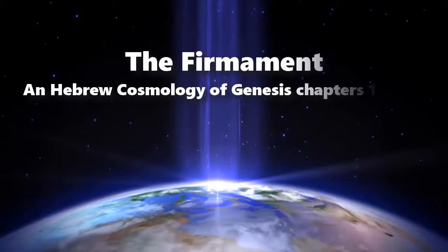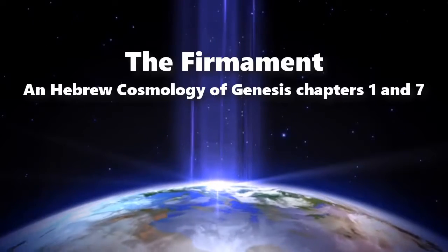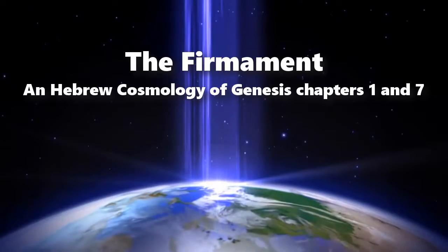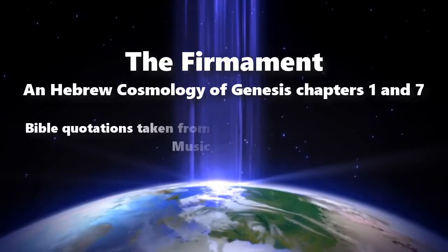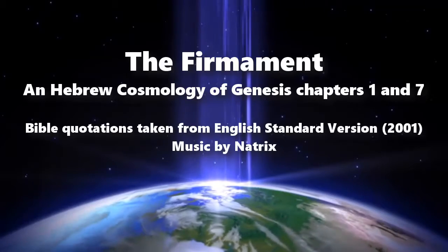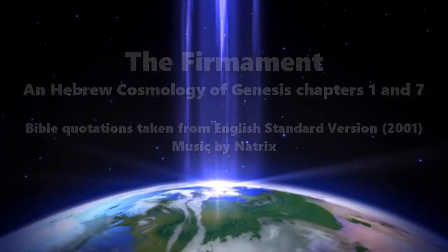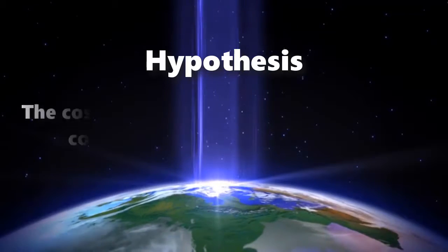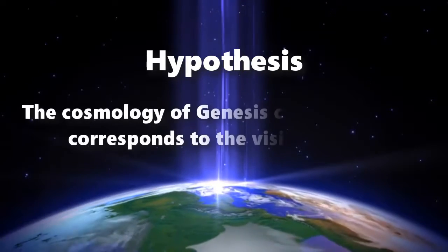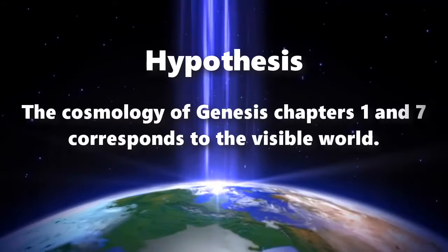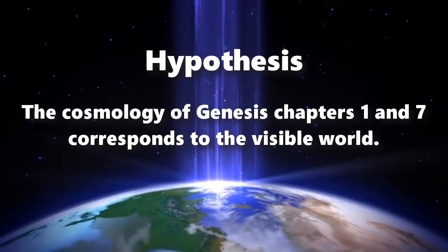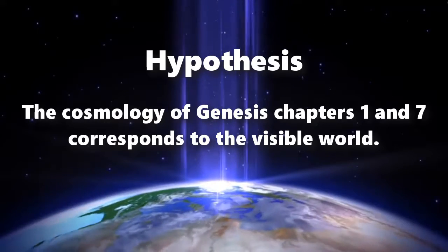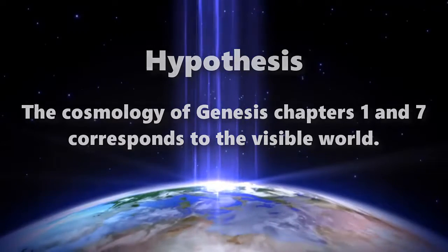The Firmament: A Hebrew Cosmology of Genesis, Chapters 1 and 7. Hypothesis: The cosmology of Genesis, Chapters 1 and 7, corresponds to the visible world.